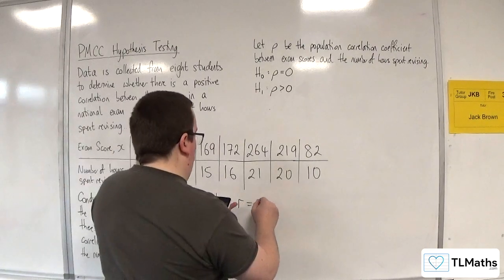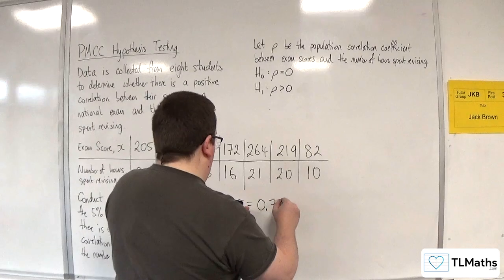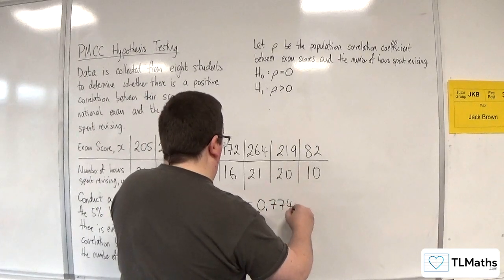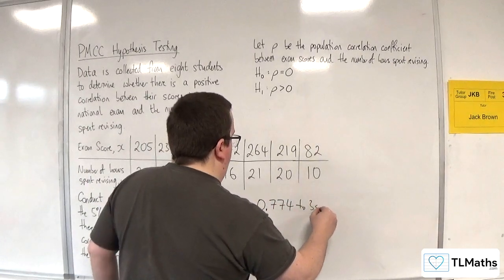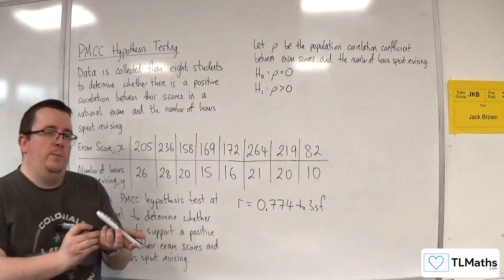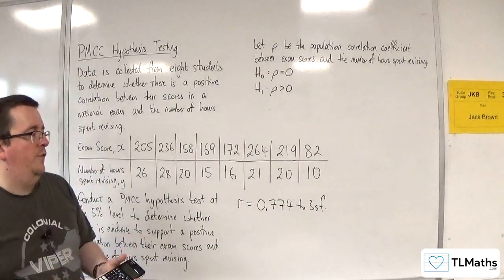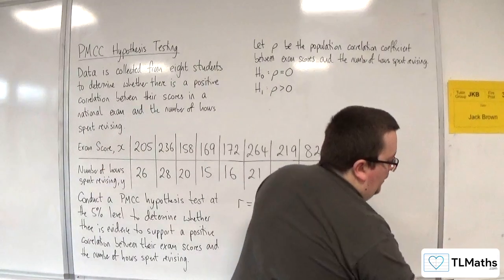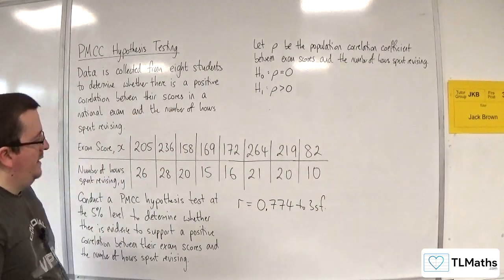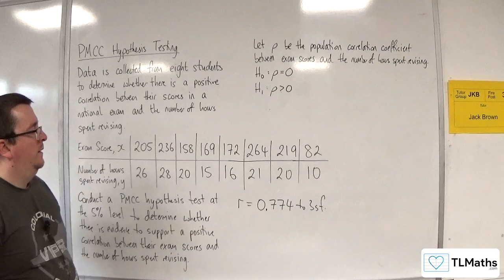So the value of R is 0.774 to 3 sig fig. Okay, so generally we give R to 3 sig fig. You can go to four decimal places if you like, but usually you see it written to 3.